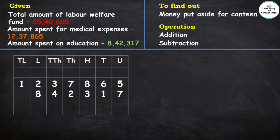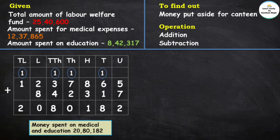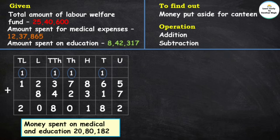12,037,865 plus 8,042,317. 5 plus 7 is 12, carry 1. 6 plus 1 is 7, plus 1 is 8. 8 plus 3 is 11, carry 1. 7 plus 2 is 9, plus 1 is 10, carry 1. 3 plus 4 is 7, plus 1 is 8. 2 plus 8 is 10, carry 1. 1 plus 1 is 2. Money spent on medical and education is 20,80,182.